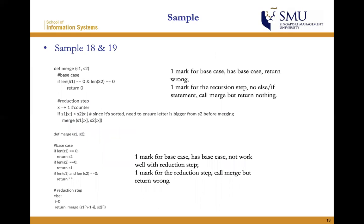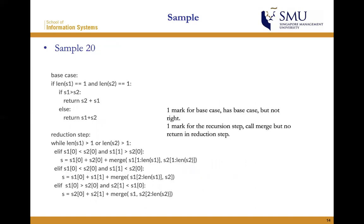For sample eighteen, I will give one mark for the base case — it has a return but the return is wrong. For sample nineteen, one mark for the base case but it does not work well with the reduction step, and one mark for the reduction step because it calls merge but returns the wrong value.